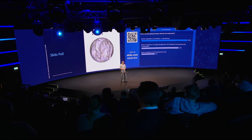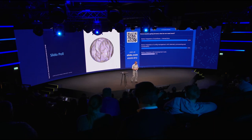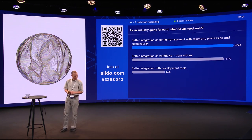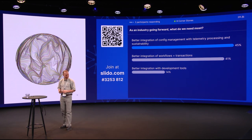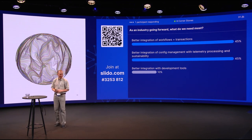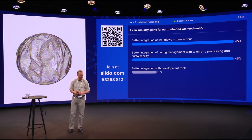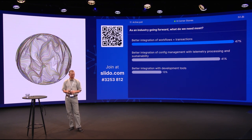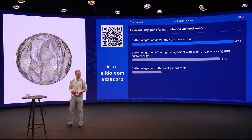As an industry going forward, what do we need most in terms of product qualities? We need reliability, security, and performance. Ease of development is also important, but it's a dramatically lower number than reliability and security. And we often hear 'performance, performance, performance,' but actually in this audience it's a lower number than the others. The last poll: do we need better integration of workflows and transactions, or better integration of config management with telemetry processing and sustainability, or development tools? It's roughly even between the first two, and tools is less important.